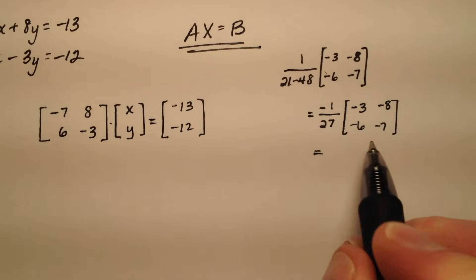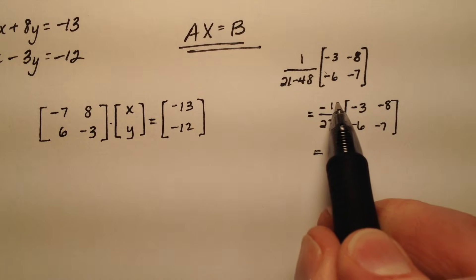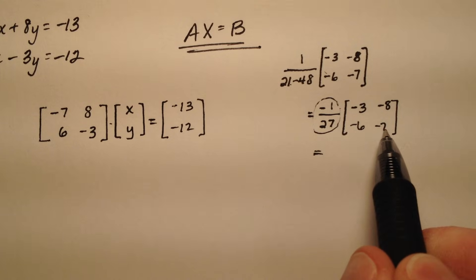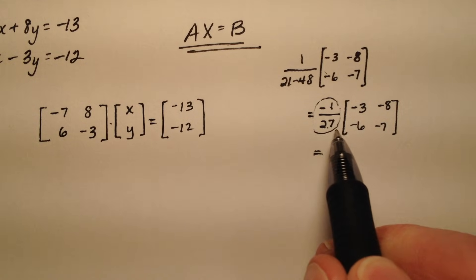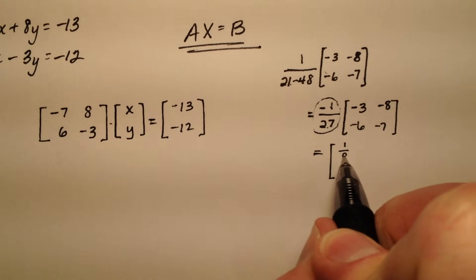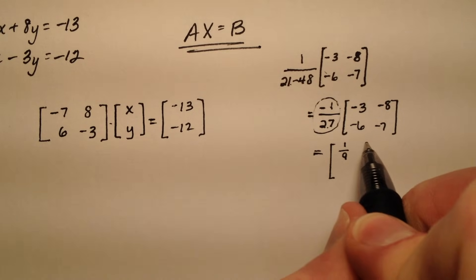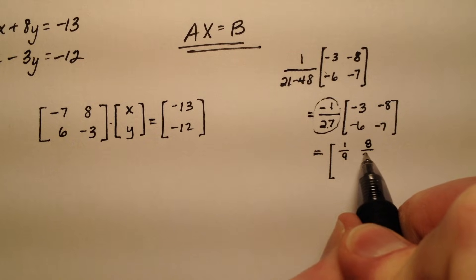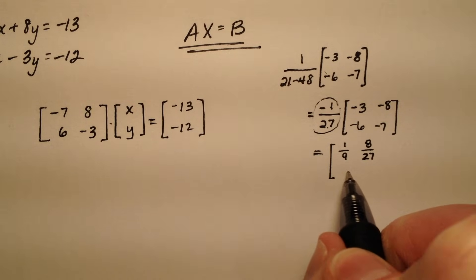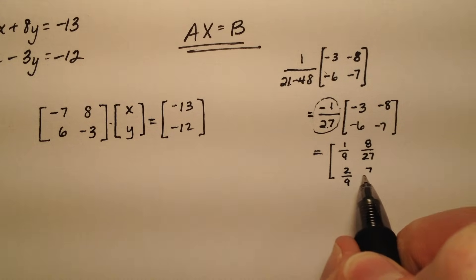Okay so the last thing I'm going to do is simplify this. Scalar multiplication tells me that every term inside here is going to be multiplied by negative 1 27th. So this will look like 1 9th, 8 27ths, 6 27ths can reduce to 2 9ths, and then 7 over 27.